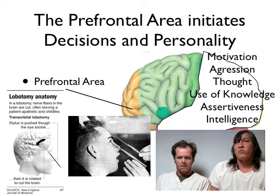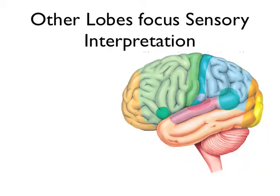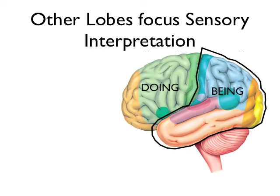The prefrontal area is, if you wanted to pick one place in the human brain that is really who you are as a person, it's right here. Prefrontal area uses and integrates all the other parts of the brain. The frontal lobe is the doing part of the brain — all the other lobes are the being parts, recording all the experiences you have over time. The frontal lobe uses and expresses all that you are, all that you've experienced, all that you know.